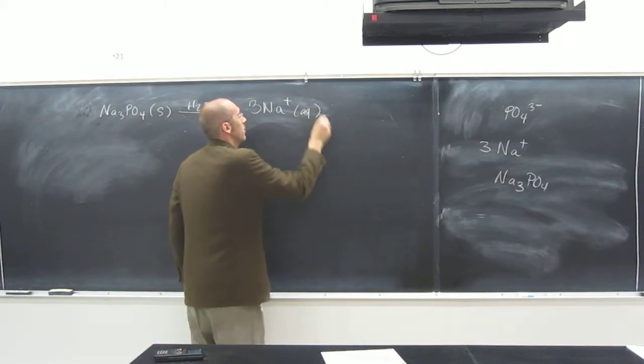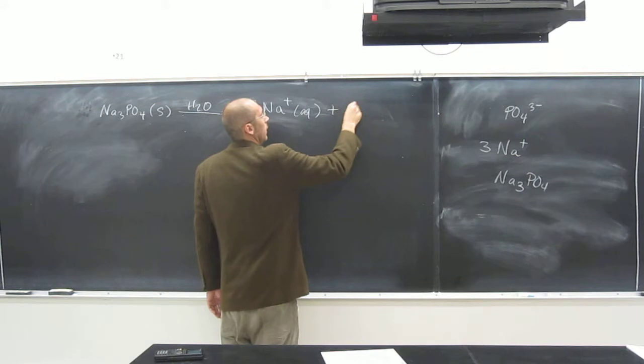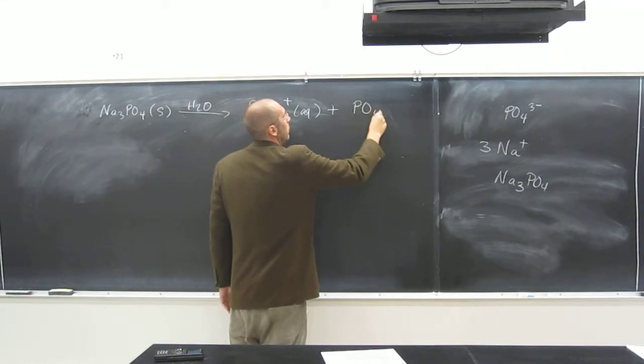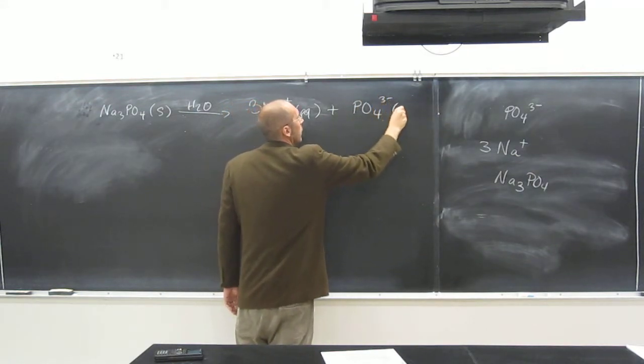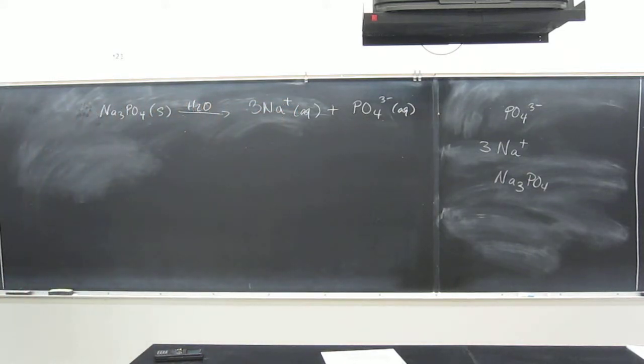And since we've dissolved them into water, they're aqueous now, okay? And we have one PO4, three minus, aqueous, like that. Okay, so it's said that the concentration of our solution, the concentration of Na3PO4 was one molar.